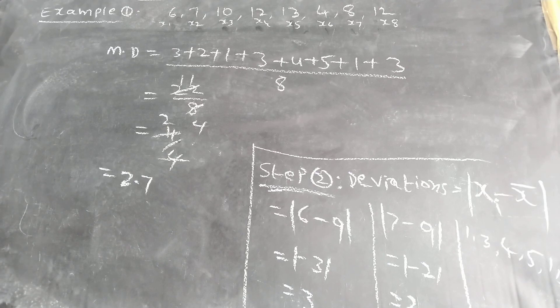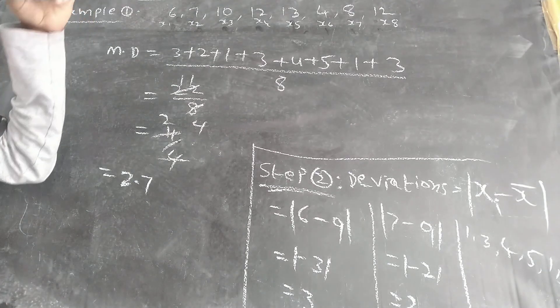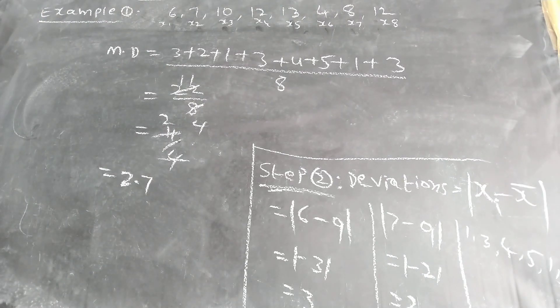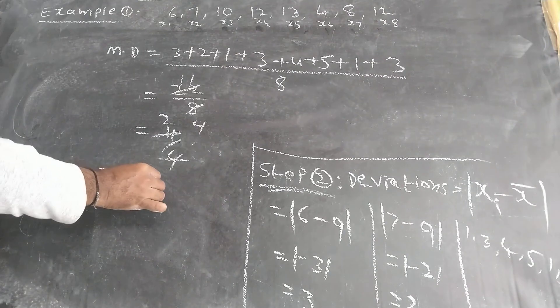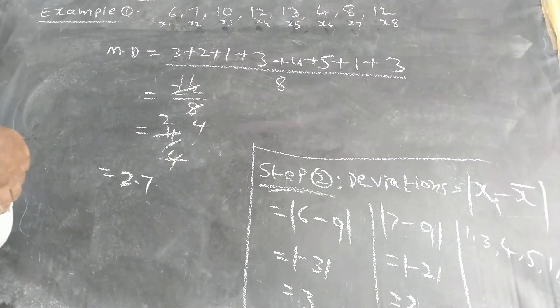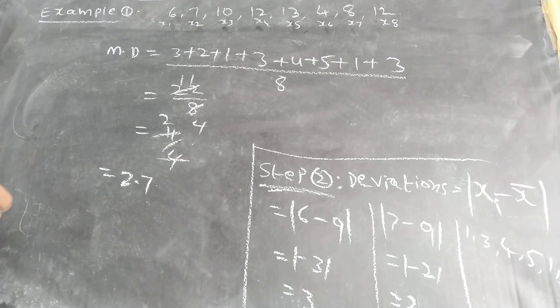Any doubts? What is the mean? 2.7 is the mean deviation. After decimal, approximate value you can write. Oh no need, exactly value. Okay, approximately nearby value you can write, no need.